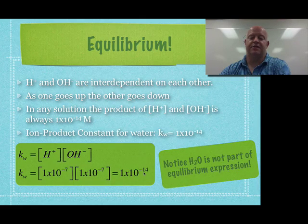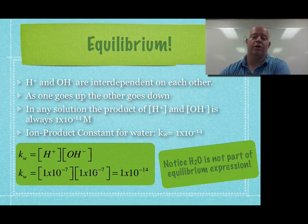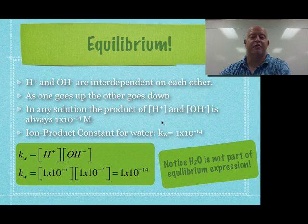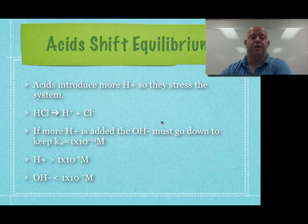So the K-W for water is always 1 times 10 to the negative 14th, meaning it's heavily reactant favored. However, because this always stays the same, I can mess with these two numbers here and make one higher, one lower, meaning I can add more H-plus in there or more OH-minus, which hopefully you guys are thinking is leading us down the track of what's an acid and what's a base.